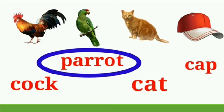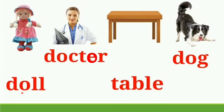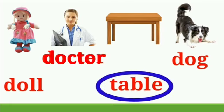Now we'll see the next example: Doll, Doctor, Table, and Dog. Here, which is the odd man out? Correct! It's Table. All other words are starting from the letter D.